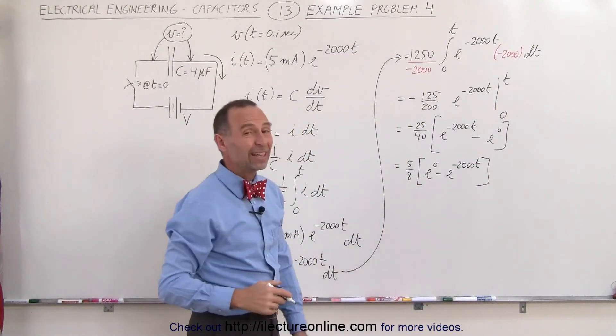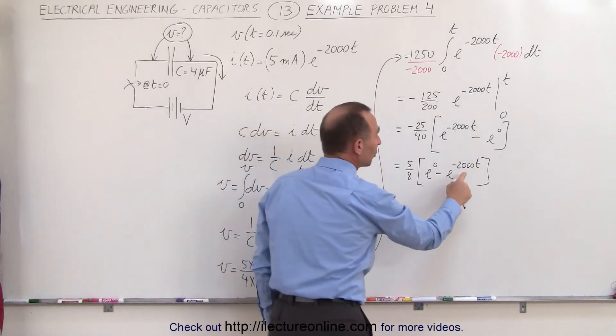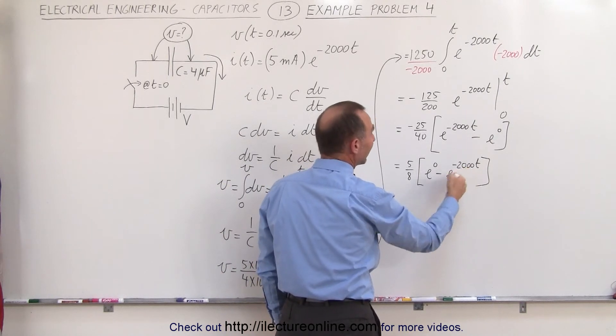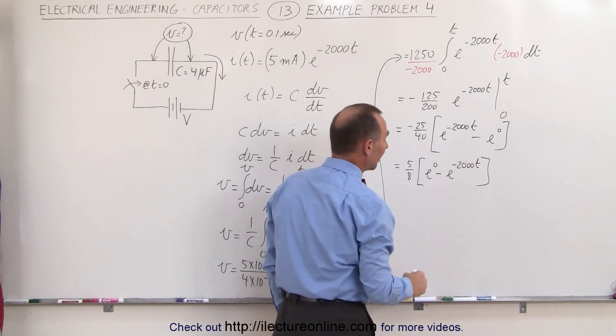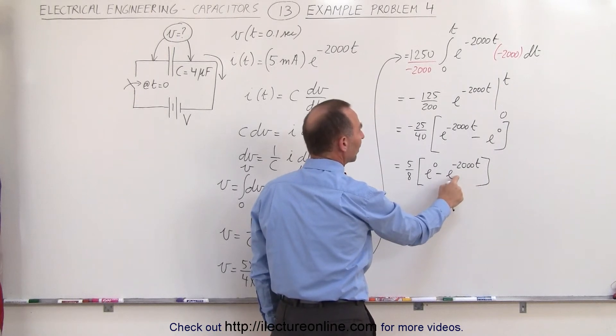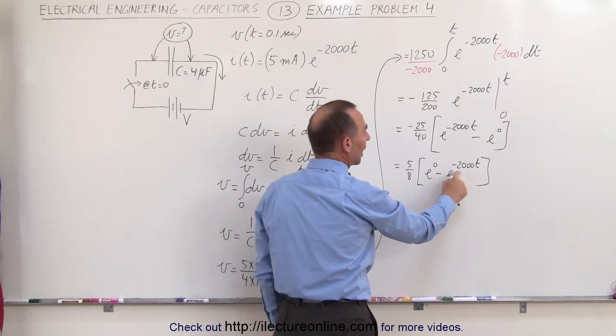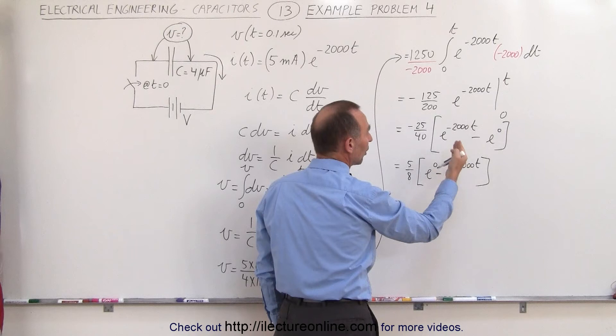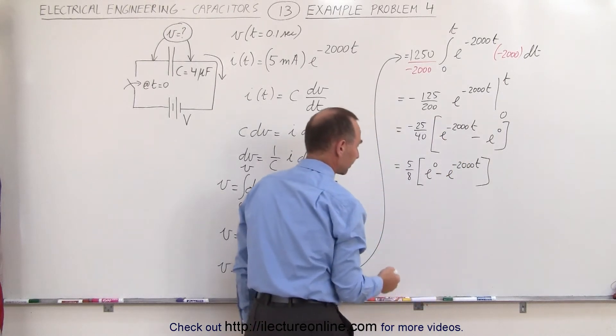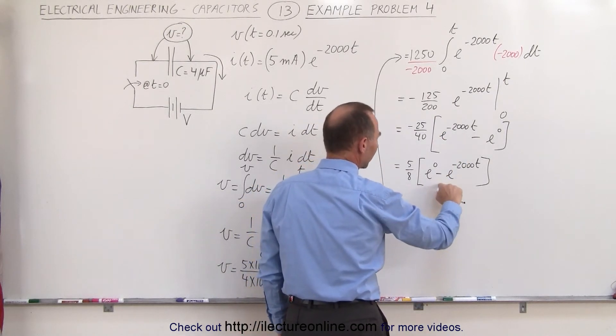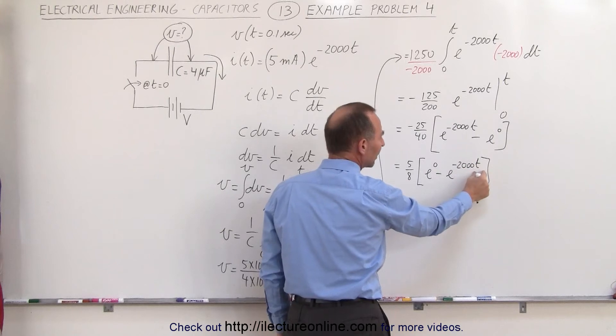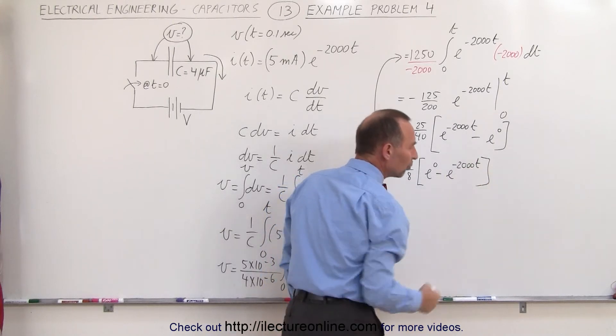Now notice as t gets to be a big number this pretty well goes to 0, right? When t goes to 1, e to the minus 2000, that's basically insignificant. So this very quickly goes from e to the 0 power, which is 1, to a number that is very very small. In other words, I can probably ignore that for any values of t that are larger than any small number.